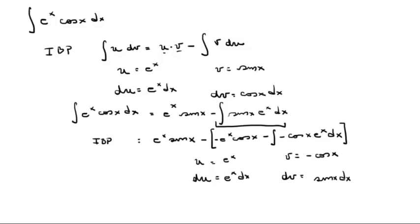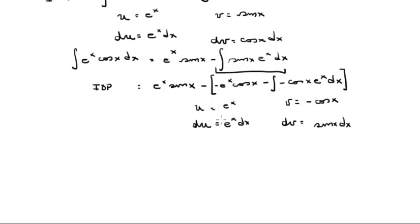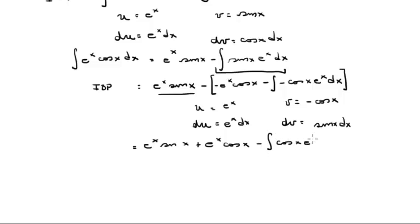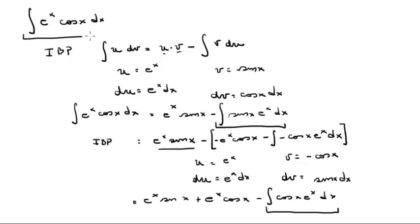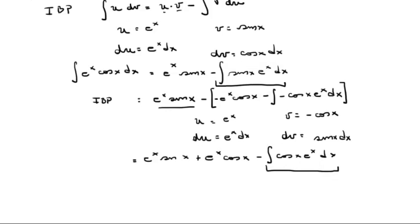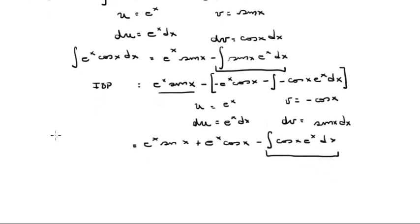Let me scroll down to have a little more space. Look at what's going to happen now. When you clean this up, you get e to the x sine of x — that remains the same — and the minus times minus becomes plus, giving plus e to the x cosine of x. Then minus, minus, minus eventually becomes just one minus the integral of cosine of x times e to the x dx. This is the same as our original equation.